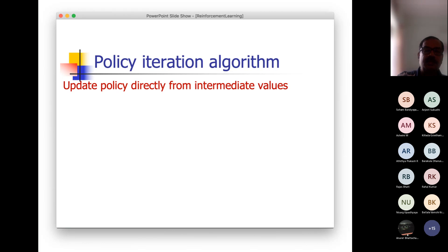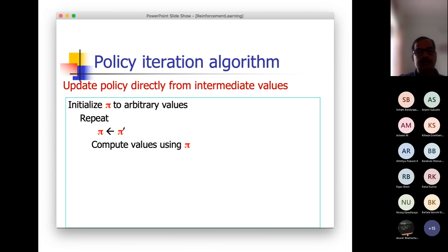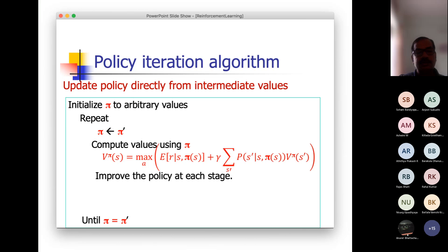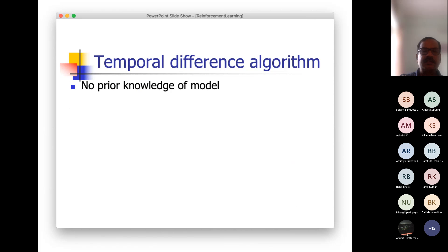In policy iteration, your convergence is tested over the policies. That means you can initialize pi to arbitrary values and use them to choose an action for computing the values. The policy is guiding you to compute the maximum possible values at each state given that policy. Whenever you choose an action, you also immediately update your policy. You go on doing these things until you reach convergence. These are things we discussed in the previous class — I am just recapitulating for better continuity.